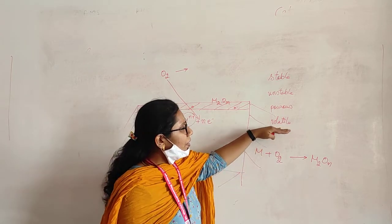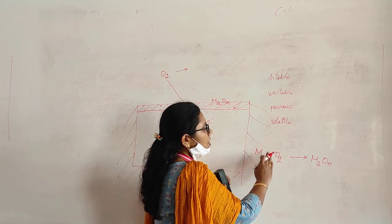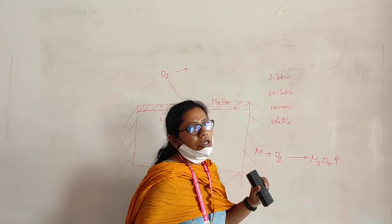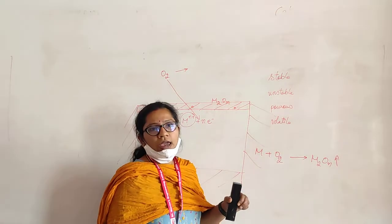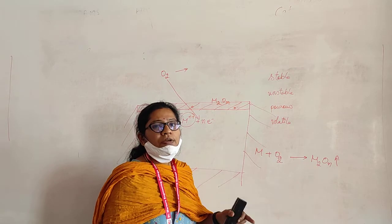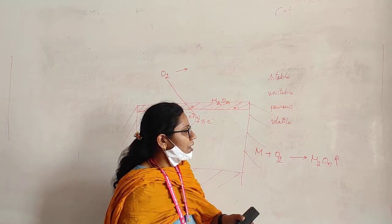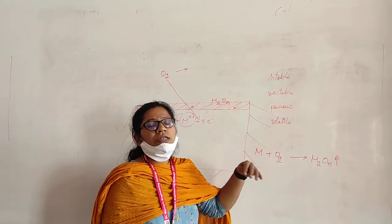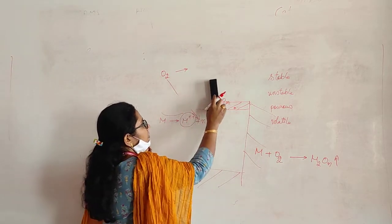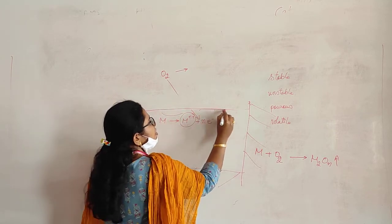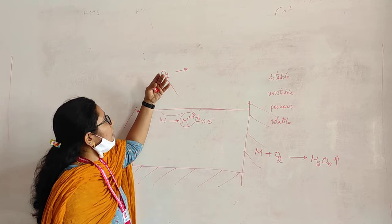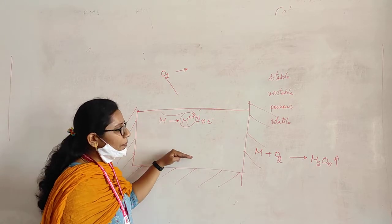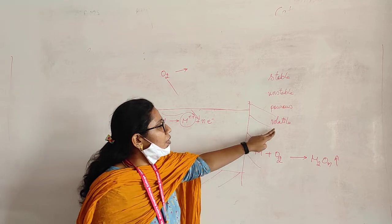In the volatile oxide layer, when metal reacts with oxygen, it forms a metal oxide which is volatile — meaning it will vaporize. It will not stay in solid form; it is more stable in the vapor form, so it immediately gets converted into vapor. Once the vapor is formed, it cannot protect the metal — it will escape into the atmosphere. A fresh layer of the metal will then be exposed to the environment, which will again react with oxygen, and the metal oxide formed will again vaporize. In this manner, the complete destruction of the metal will occur in the case of a volatile oxide layer.